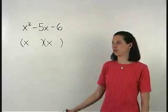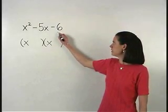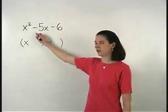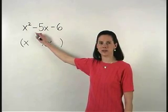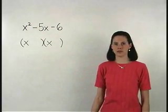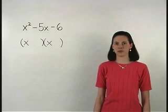Now we want to find factors of the constant term that add to the coefficient of the middle term. So we are looking for factors of negative six that add to negative five.